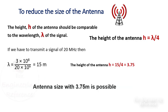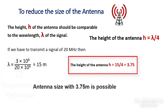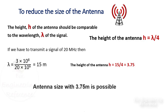Let's consider another example with the carrier wave frequency of 20 MHz. Then the wavelength lambda equals 3×10⁸ divided by 20×10⁶, so the wavelength is equal to 15 meters. The height of the antenna h should be lambda by 4 in length at least, so the antenna size can be 3.75 meters. These examples show that we need to modulate the message signal over the high-frequency carrier signal so that we can have a practical value for the height of the antenna.